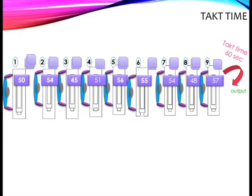In this example, the last process of the throughput time is 57 seconds, but the takt time is 67 seconds.